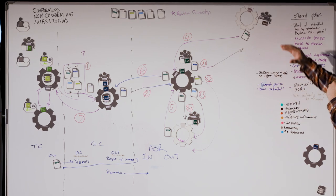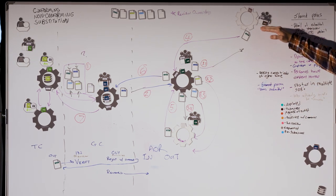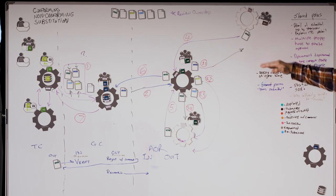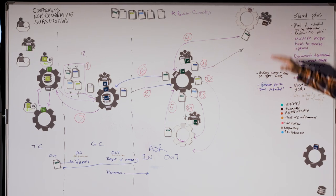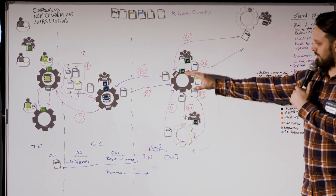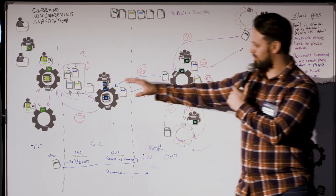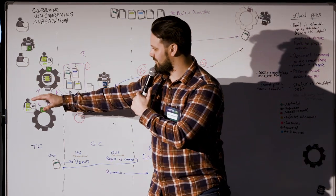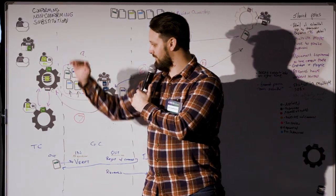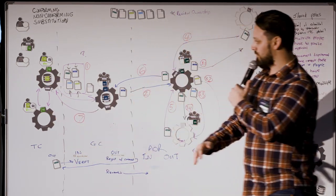An owner may think there are four things to get done on their building. Those four things to an owner are really ten things to an architect, which is really twenty things to a GC, which is really fifty things to a trade contractor — because they're actually the ones doing the work.